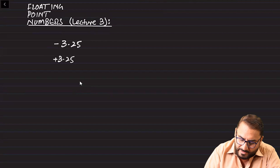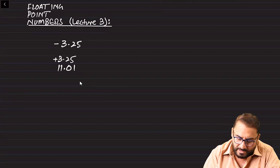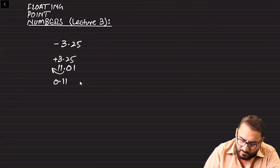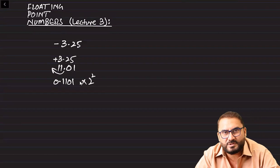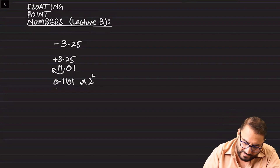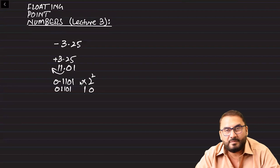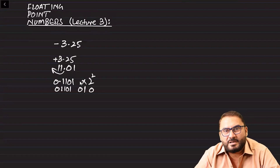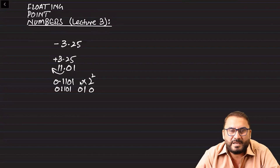So 3.25 is 3, point 4, point 5, and point 25. We move the point all the way towards the left: 0.1101. We moved the point two times, so this is the standard form. Afterwards we save it as 0.11001 and this is our floating point number.